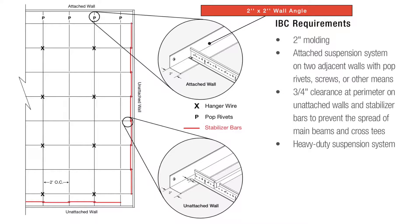IBC's code requirements and DEF installations call for a 2-inch wall molding, which allows for 3-quarter inch tee movement, plus stabilizer bars to prevent the spread of main beams and cross tees at the perimeters.